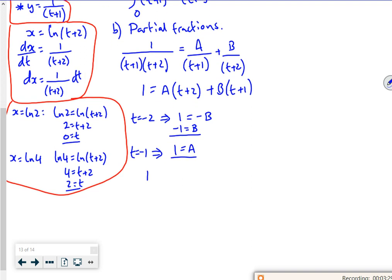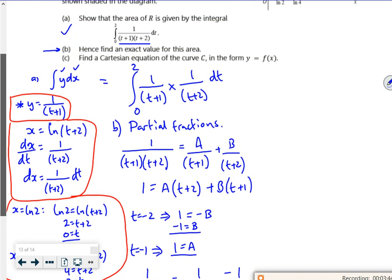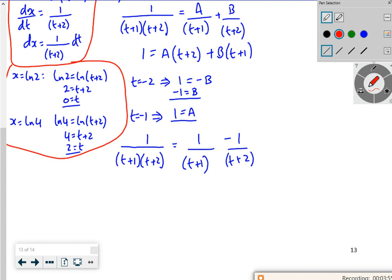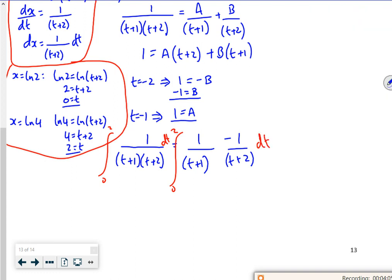So that would be 1 is A there. So my 1 over t plus 1 times t plus 2 is actually 1 over t plus 1 minus 1 over t plus 2. I'm just going to check that works. That's fine. So that's my partial fraction bit. So what I have to do now is integrate it, because I was actually going to integrate it between 0 and 2. So I'm actually integrating this between 0 and 2, dt.